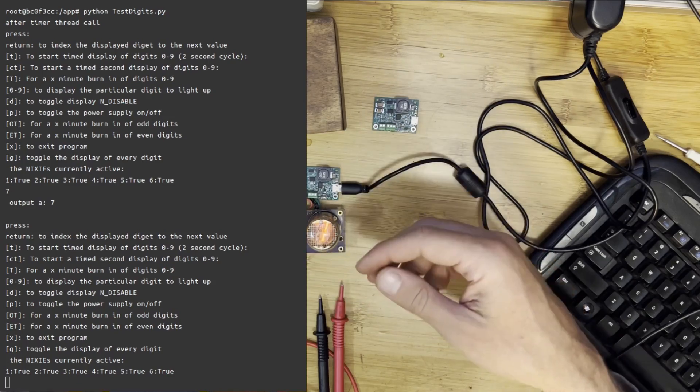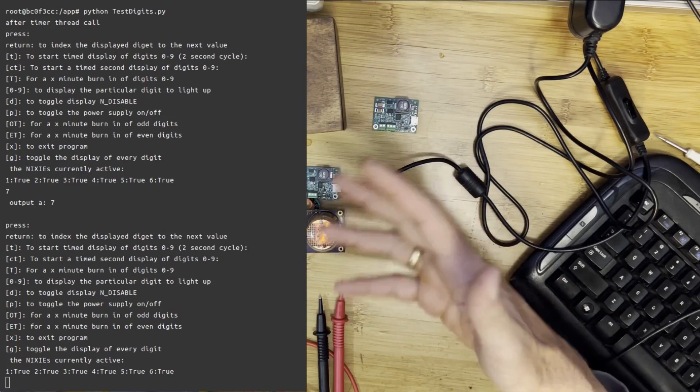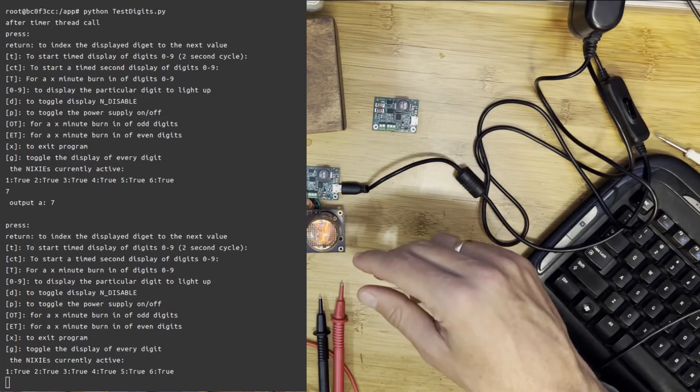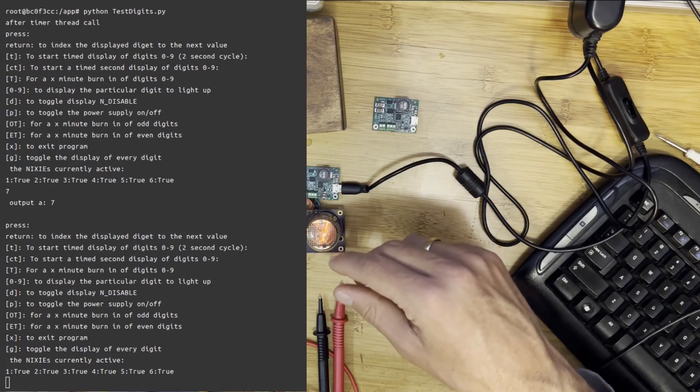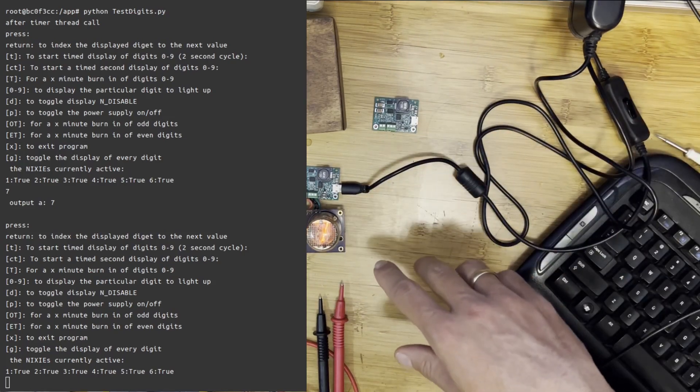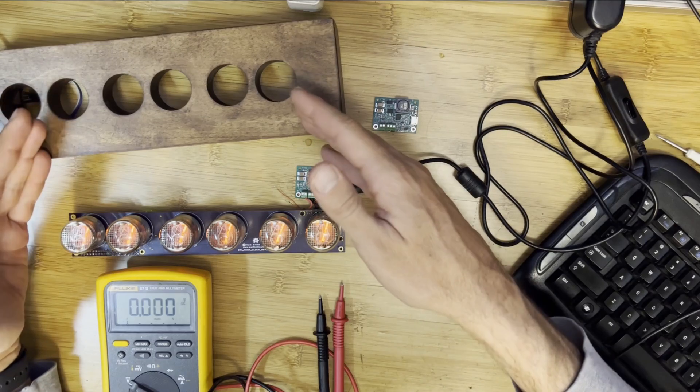And help with contamination on Nixie tubes and help fix them. That's part of this testdigits.py program that is actually on the GitHub site for the ETA Nixie tube clock.